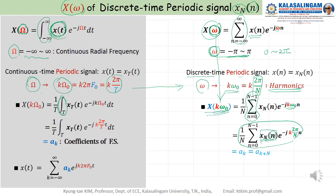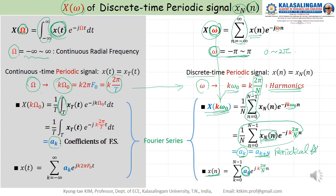This is the Discrete Fourier Transform. We can also use a_k. A_k is periodic, meaning a_{k+N} equals a_k — this is one of the important properties. Of course, knowing a_k, the Fourier coefficient, we can synthesize the original waveform x of n. This is a Fourier series, because we use a periodic signal. When the signal is not periodic, we call it a Fourier transform. When the signal is periodic, we call it a Fourier series.